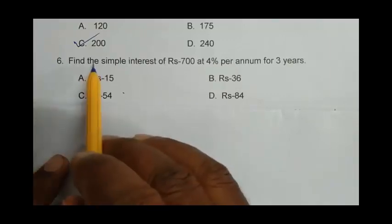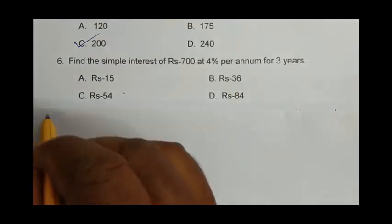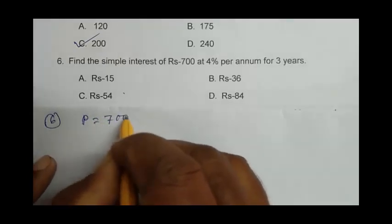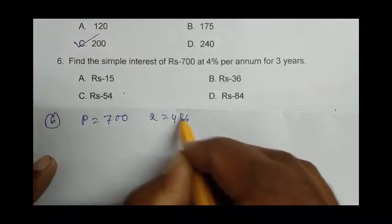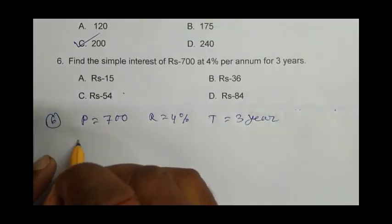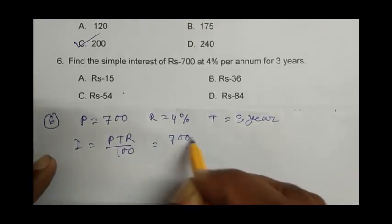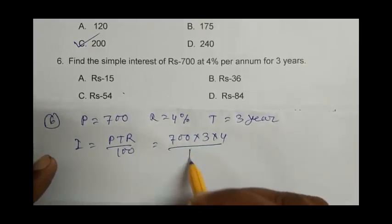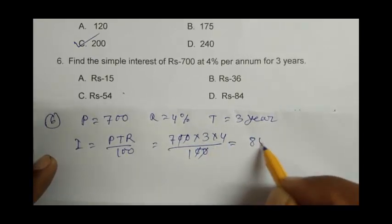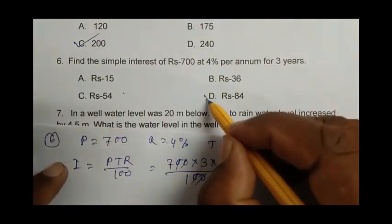Question number 6: Find the simple interest of Rs. 700 at 4% per annum for 3 years. We calculate it from the formula. Principle is Rs. 700, rate is 4%, time is 3 years. So interest is PTR ÷ 100, that is 700 × 3 × 4 ÷ 100. It becomes 84. So D is the right answer.